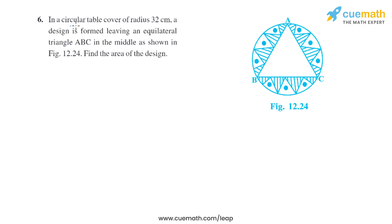Question 6 says: in a circular table cover of radius 32 centimeters, a design is formed leaving an equilateral triangle ABC in the middle as shown in the figure. Find the area of the design. To find the area of the design, we find the area of the equilateral triangle and subtract it from the area of the circle to get the area of the design.